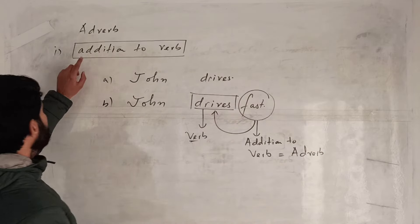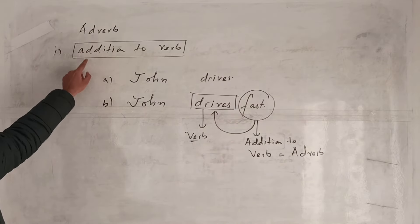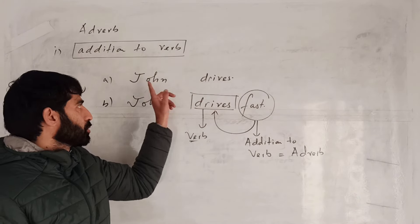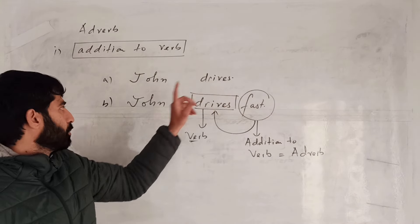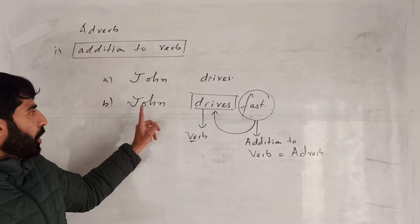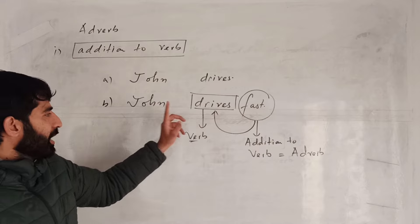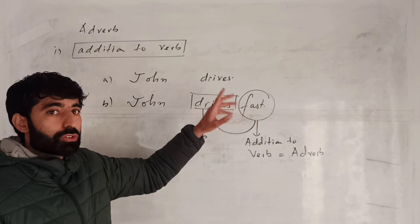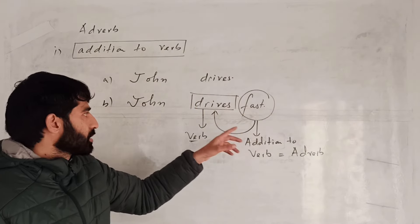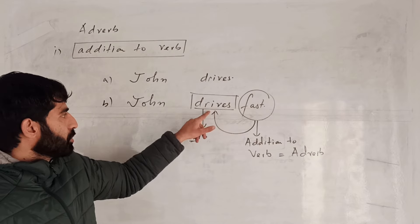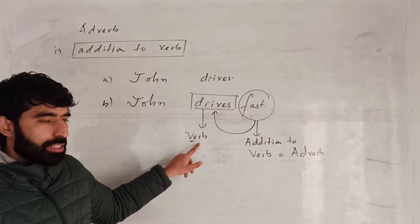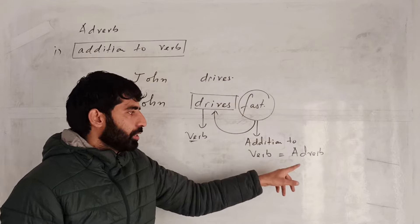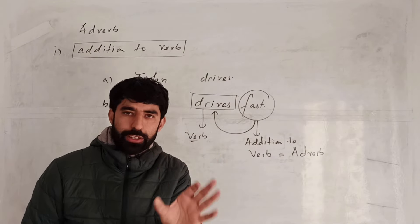Let us repeat: adverb as an addition to verb. 'John drives' — John is noun, drives is verb. 'John drives fast' — fast is an addition to drives. Drives how? Drives fast. Fast is an addition to verb, and that is equal to adverb.